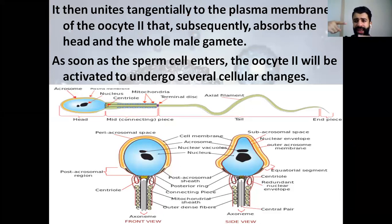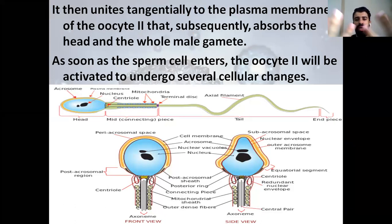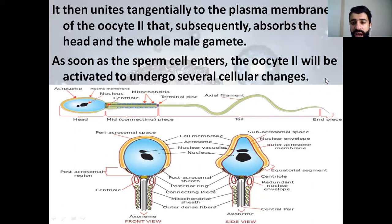Once inside the perivitelline space, the sperm unites tangentially with the plasma membrane of oocyte 2, which absorbs the head of the sperm and subsequently absorbs all of the male gamete. So oocyte 2 absorbs the head and then the entire male gamete. This is a very rapid process. As soon as the sperm enters, oocyte 2 will be activated and will undergo different cellular changes at the level of the cell.